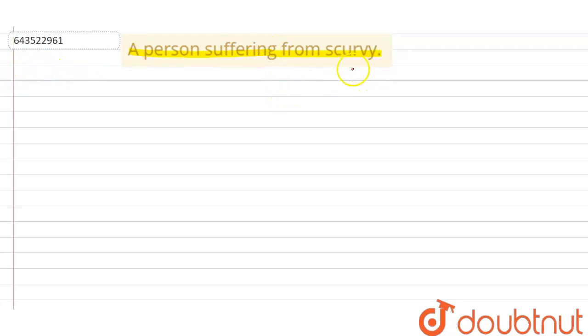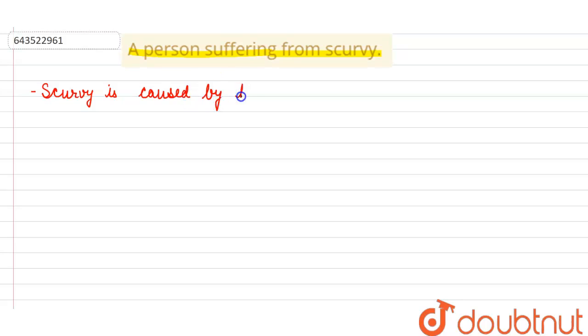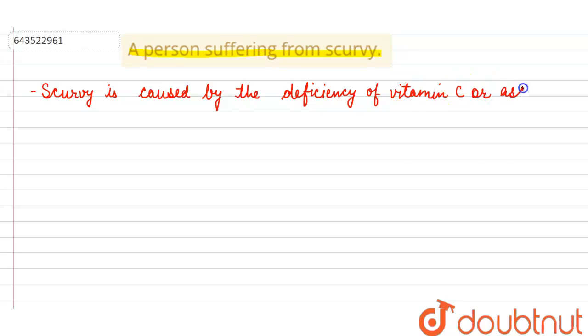A person suffering from scurvy — scurvy is a disease which is caused by the deficiency of Vitamin C, also known as ascorbic acid.